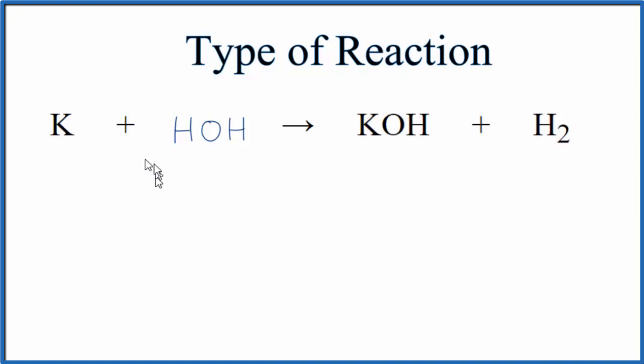So in a single replacement reaction we'll have the metal which forms positive ions replace the other positive element. In this case hydrogen has a positive charge when it makes an ion. That will come in and push this out so now it's all by itself, and then the potassium will be with the OH, that's where we get our KOH.